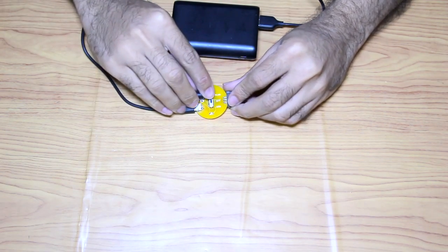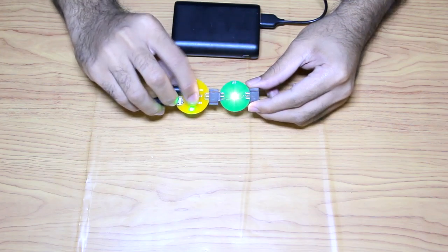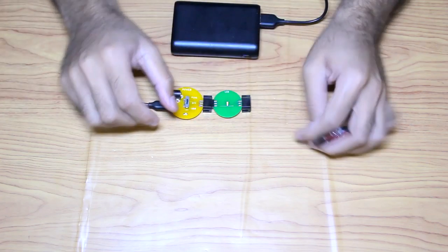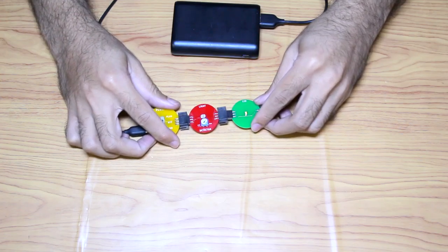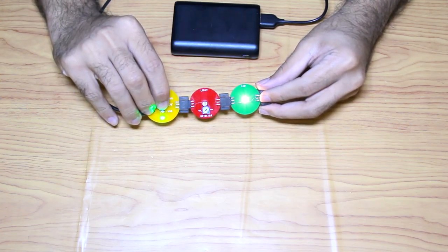So why not use this to make a fancy bed lamp which turns on and off automatically. Let's connect the light detector unit to a power unit and an LED unit to see how it works.